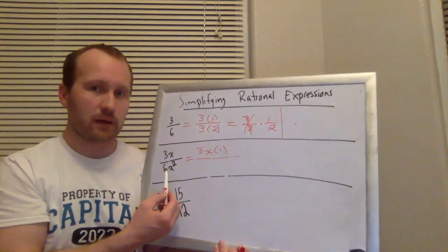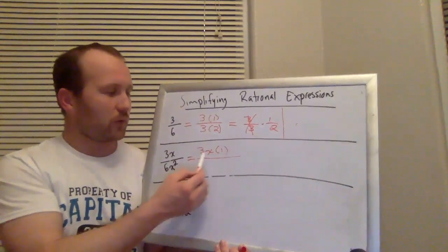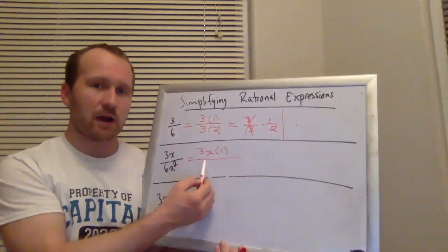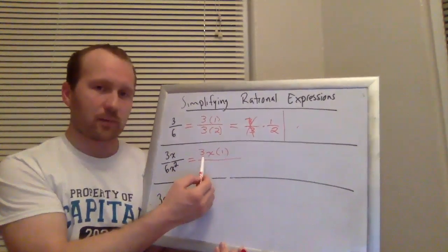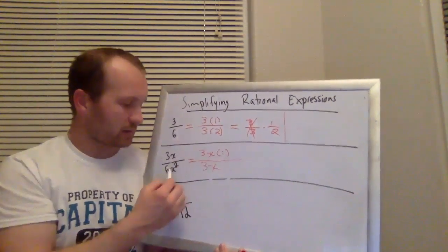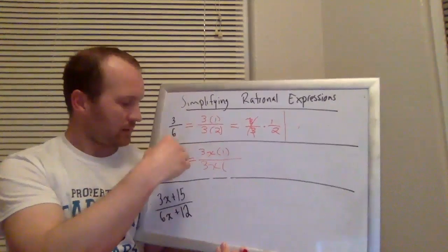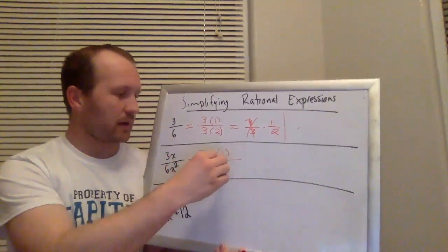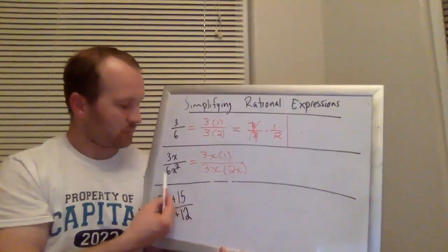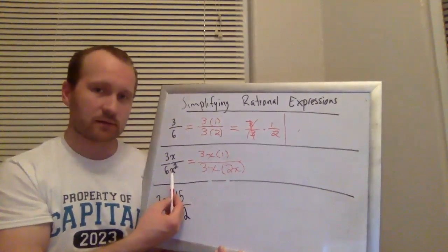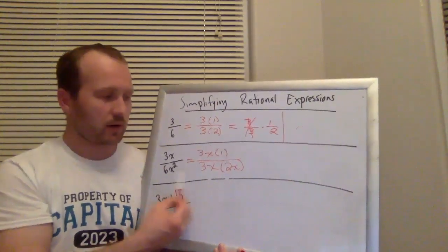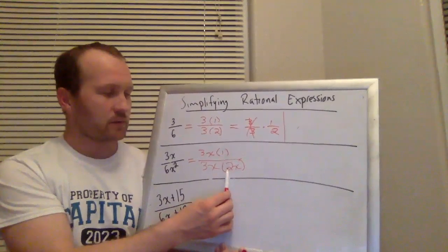There's a couple ways I could do that. But what I'm looking for is 3x because I know that the 3x in the top is the only thing that's going to possibly cancel. Is 3x a factor of 6x squared? Yes it is. 6x squared is 3x times 2x. The 3 times the 2 gives me 6. The x times the x gives me x squared. So I'm pulling apart this 6x squared as 3x times 2x.